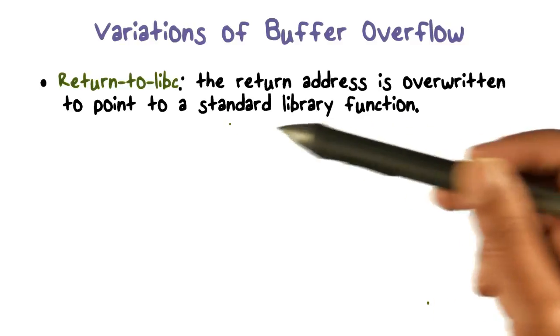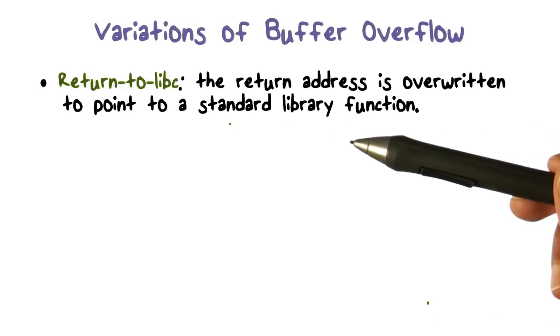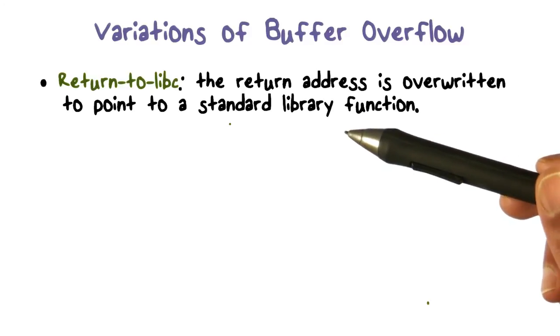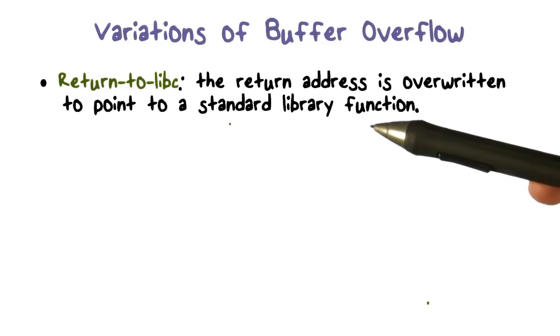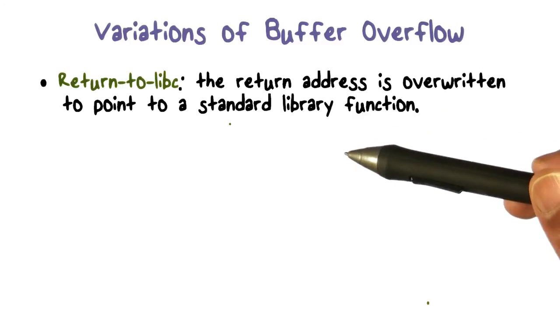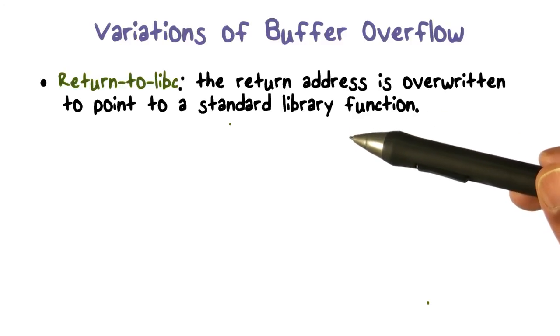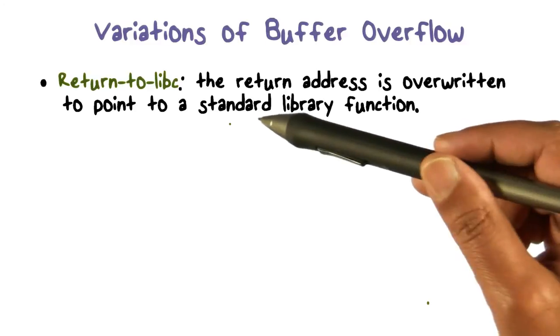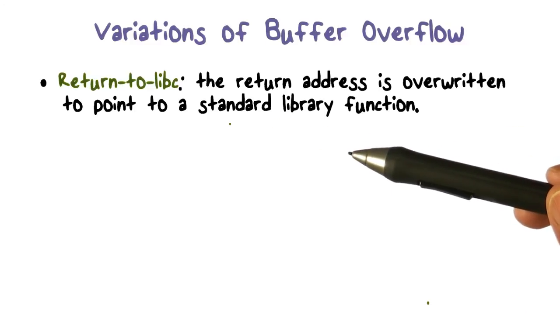The reason it would do that for us is that before we make the call to it, we go to it by returning from this function where we were able to overflow the buffer. We're going to set the stack in such a way that the arguments are configured properly. For example, I said the system call should execute bin something. It's going to be set up such that when you hit the system library function...